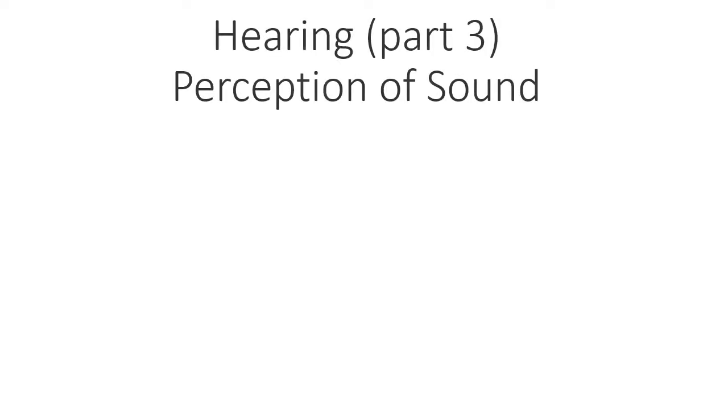Today's topic is perception of sounds. In the last few slides we have already finished about how sound is transduced — when the oscillatory movements of the basilar membrane cause transient changes in transmembrane voltage of hair cells and consequently the generation of action potentials in the cochlear afferent fibers. Now we are going to discuss how sound is perceived in the brain, and there are a few theories behind this.